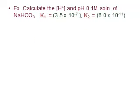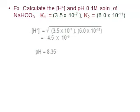Now we will solve an example. Calculate the molar concentration of hydrogen ion and the pH of a 0.1 molar solution of sodium bicarbonate. K1 equals 3.5 times 10 to the power minus 7, and K2 equals 6 times 10 to the power minus 11. The molar concentration of hydrogen ion equals the square root of K1 times K2. Substituting and using the calculator, the answer is 4.5 times 10 to the power minus 9. Therefore pH equals minus log [H⁺], so pH equals 8.35.